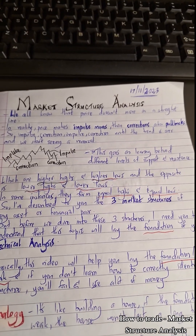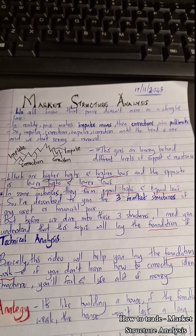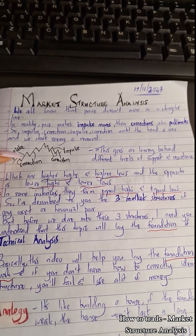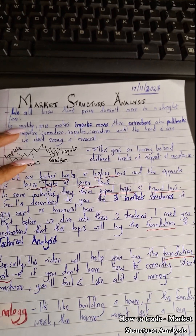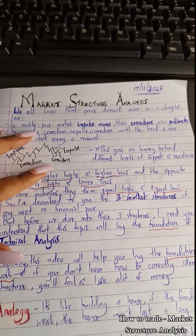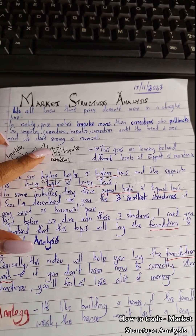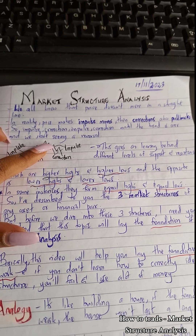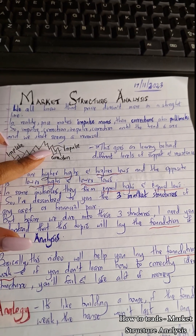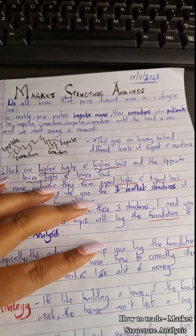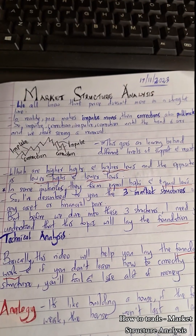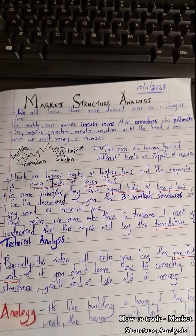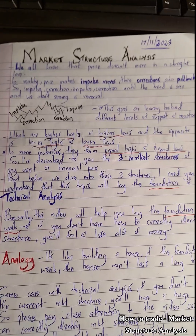This goes on leaving behind different levels of support and resistance, which are higher highs and higher lows. On the opposite side, you get lower highs and lower lows. And in some instances they form equal highs and equal lows.